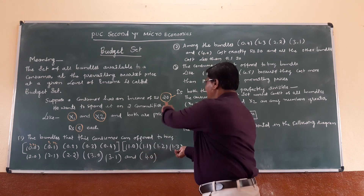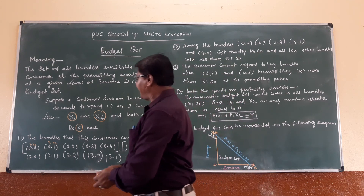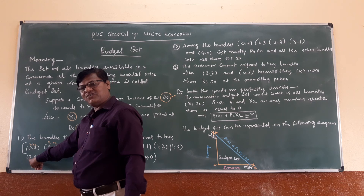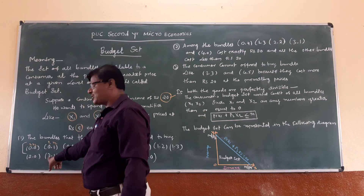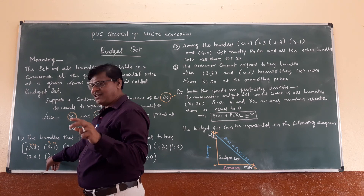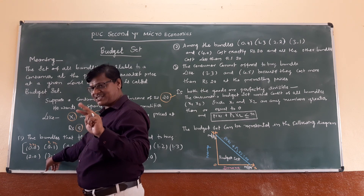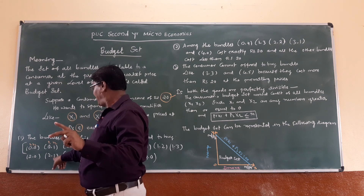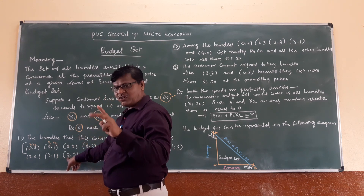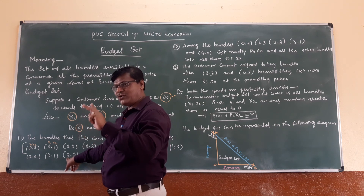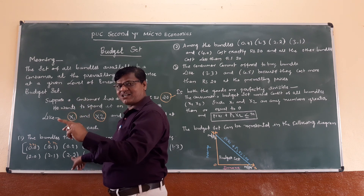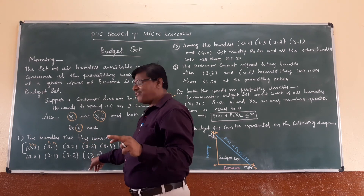He can also choose 2 of X1 — 2 times RS5 equals RS10. And if he buys 2 X1, that means spending RS10 on X1 and RS10 on X2 — 10 plus 10 is equal to RS20. He can also choose 3 of X1.